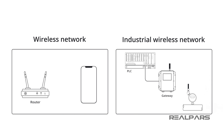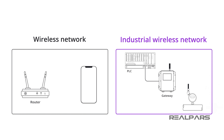After watching this video, you'll be able to easily explain the difference between a typical wireless network that we use at home or the office, like Wi-Fi, and an industrial wireless network.